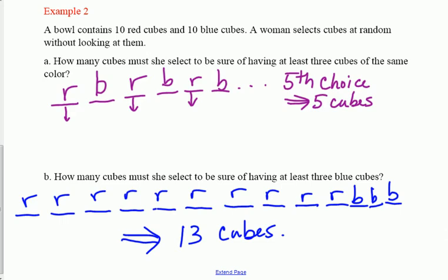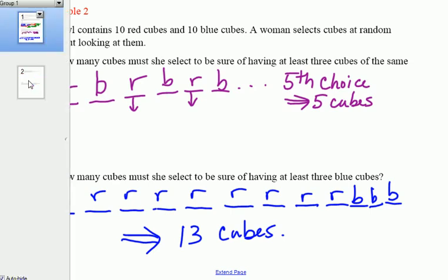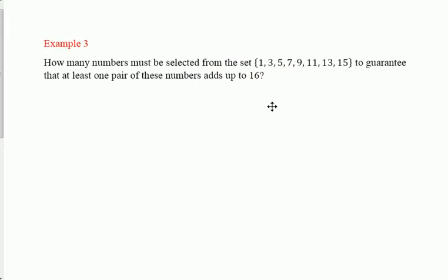Let's go over a few more. How many numbers must be selected from the set {1, 3, 5, 7, 9, 11, 13, 15} to guarantee that at least one pair of these numbers adds up to 16? If you notice, it's a clever question in the sense that here are the ways you can add up to 16. I'm going to take this set and split it into a number of subsets.